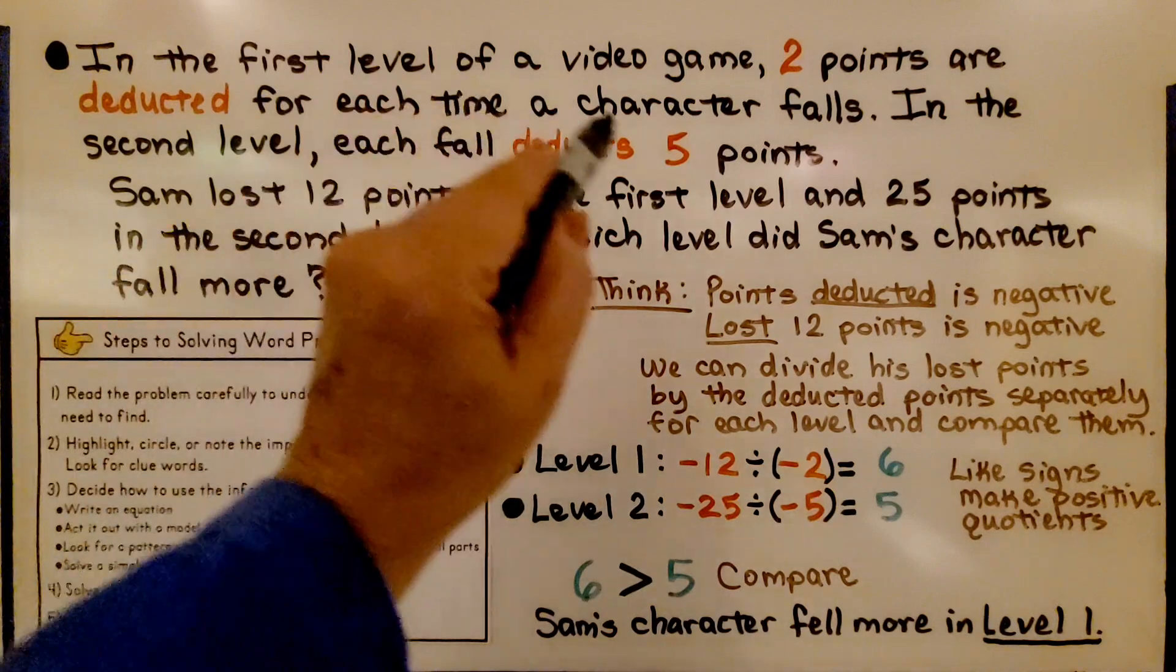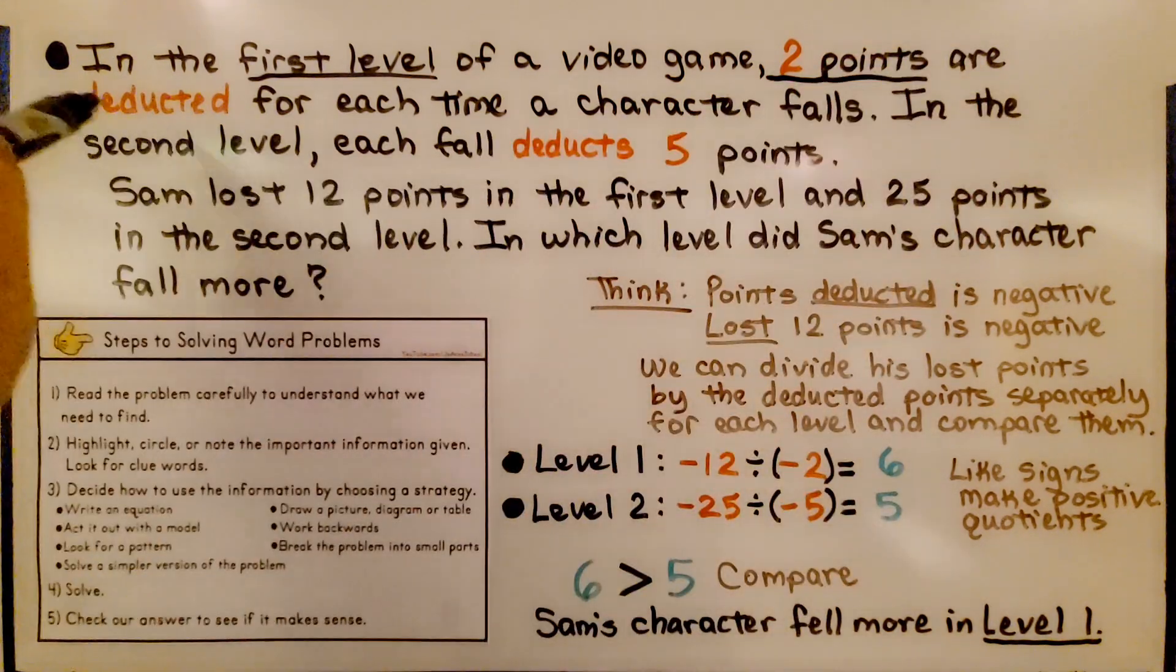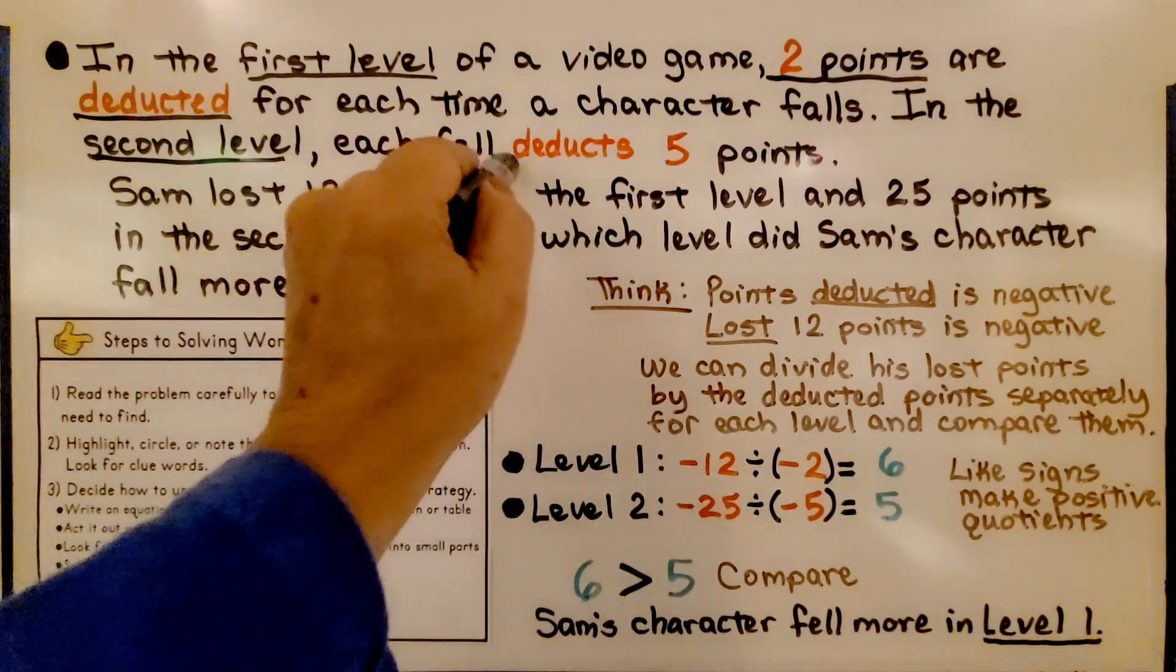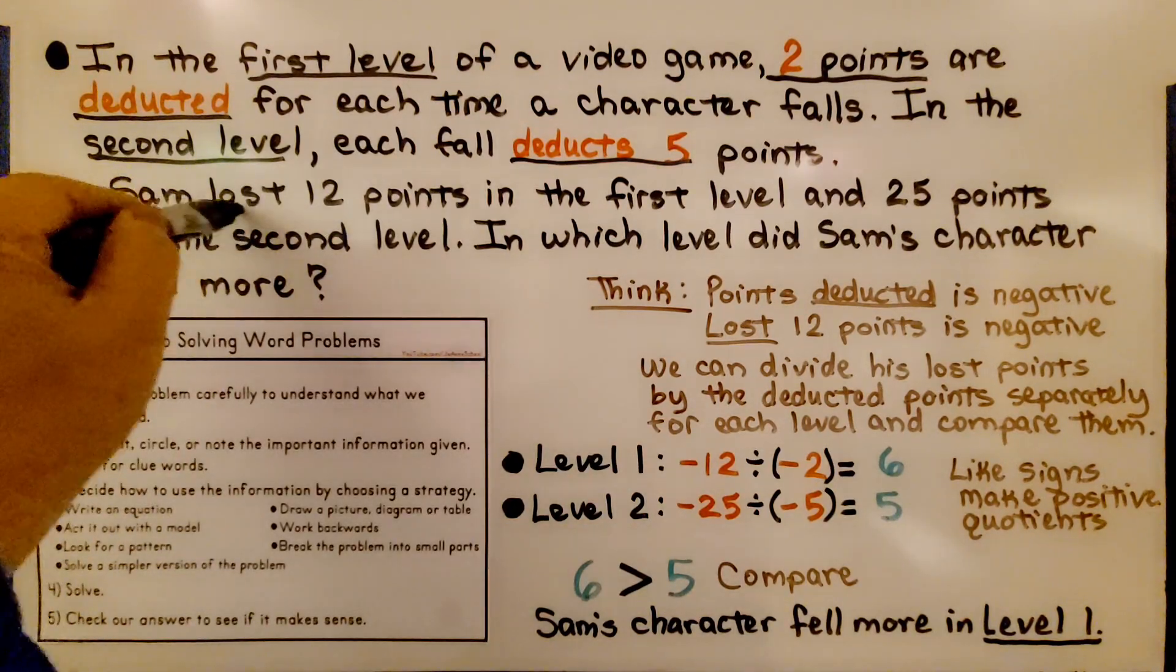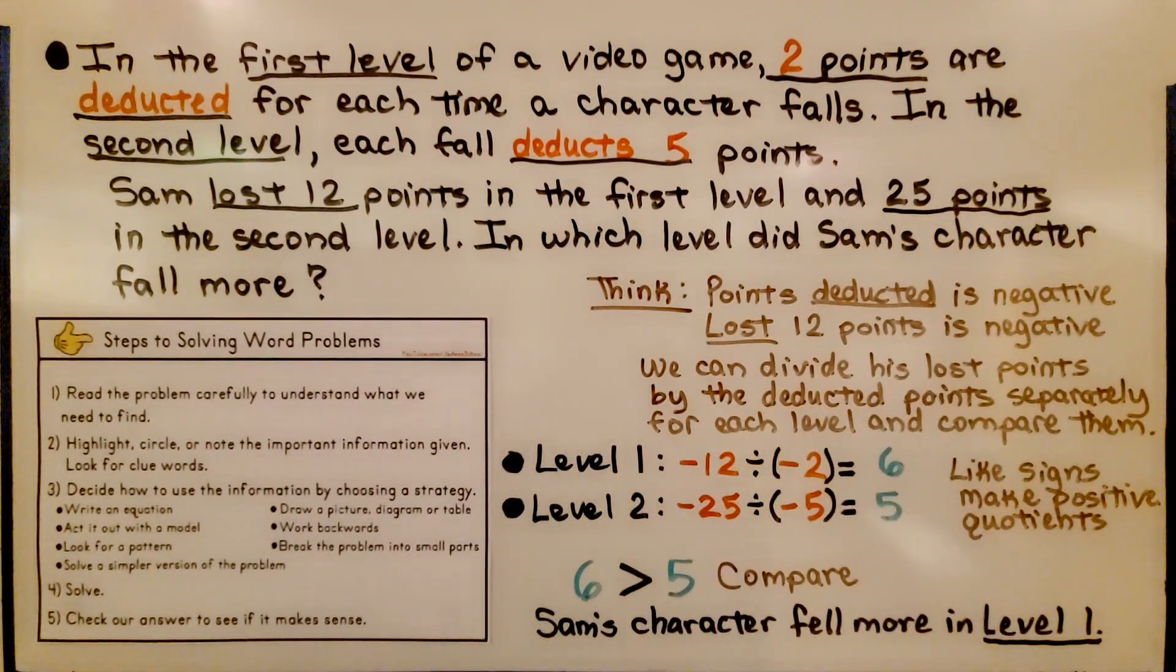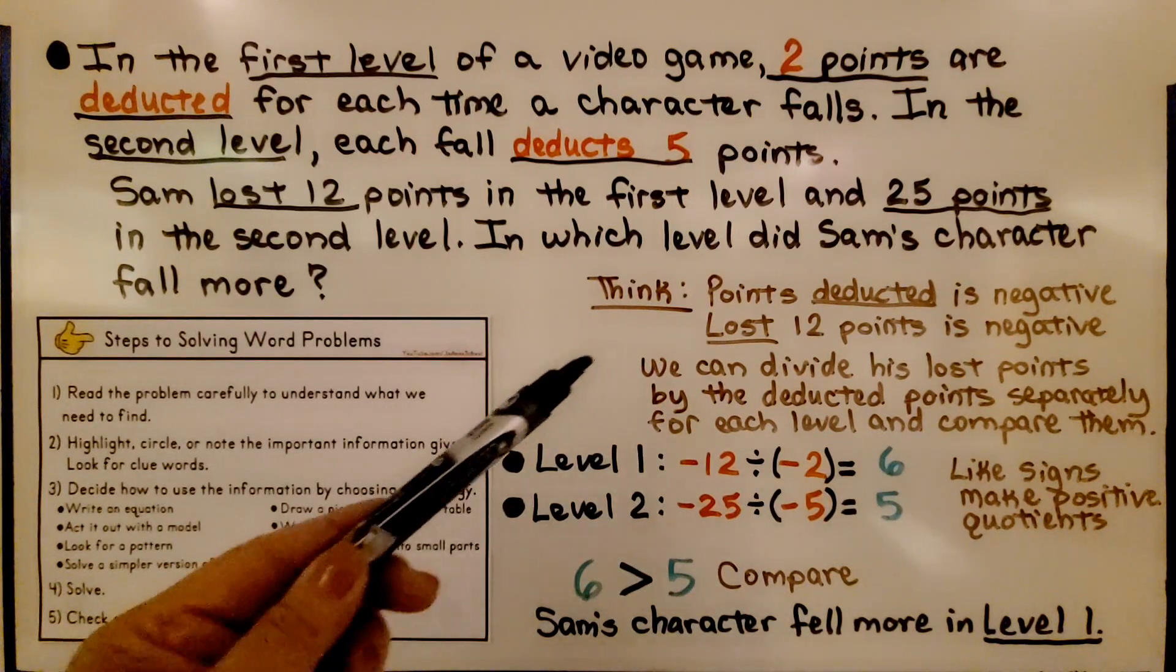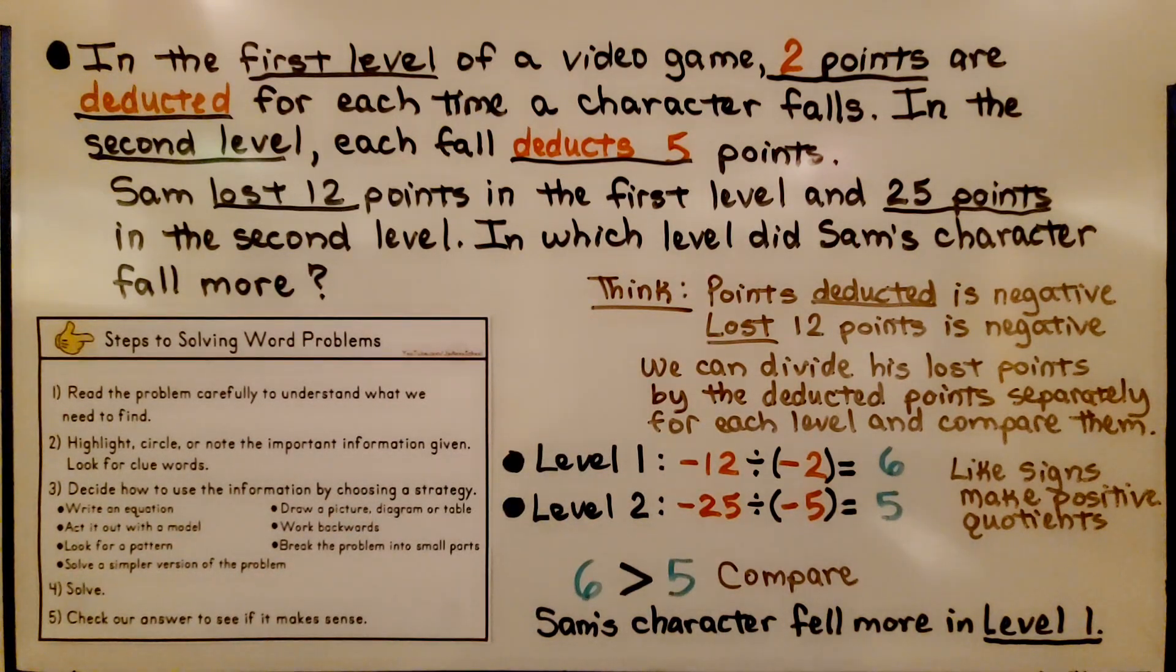We see that in the first level, it's two points are deducted each time a character falls. In the second level, it deducts five points. We know that Sam lost 12 points in the first level and 25 points in the second level. We need to figure out which level Sam's character fell more. Think: Points deducted is negative and lost 12 points is negative. We can divide his lost points by the deducted points separately for each level and compare them.